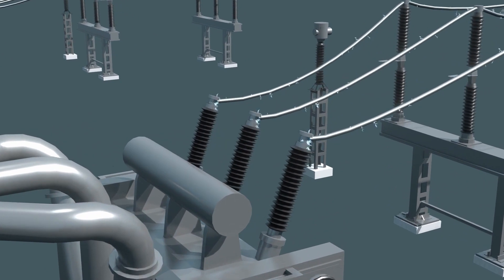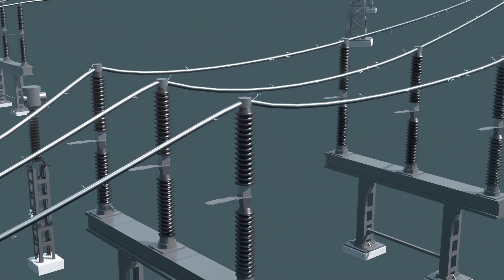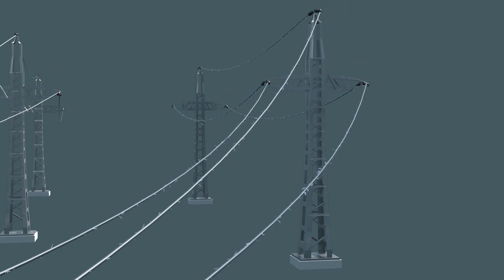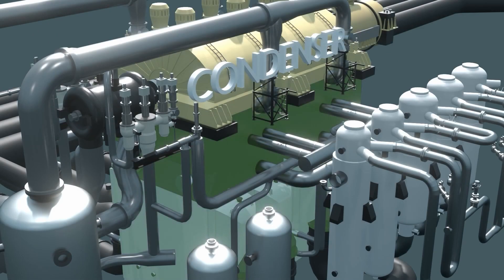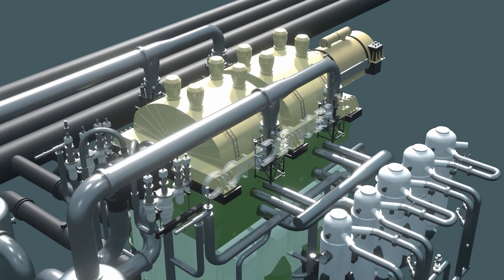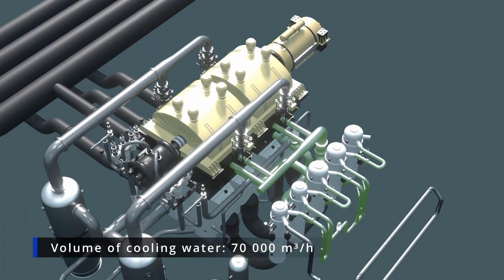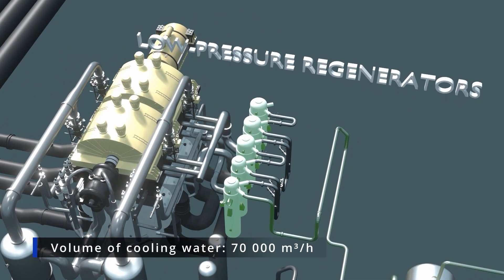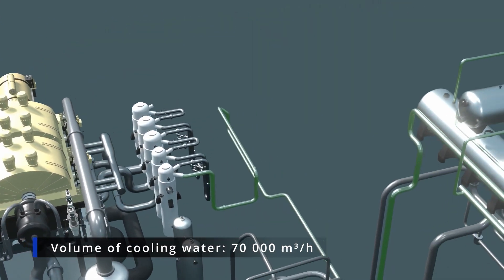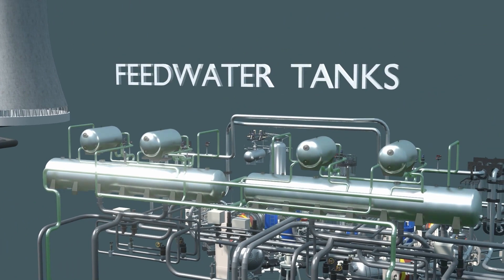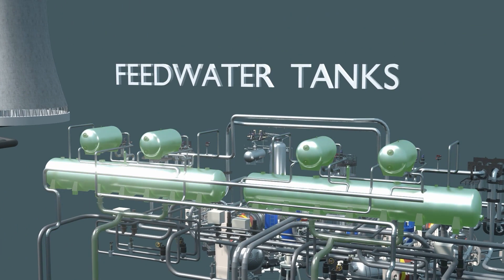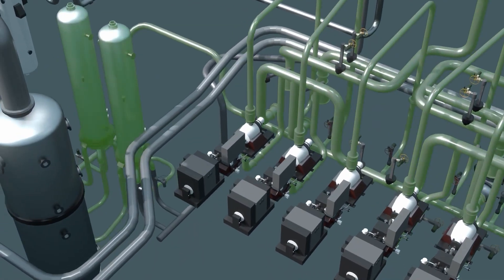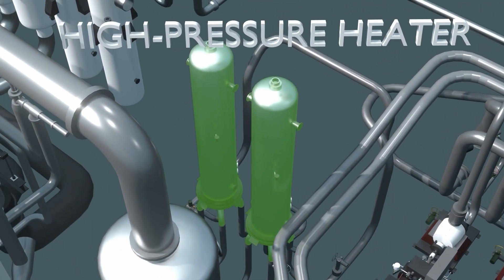While the electricity from the nuclear power plant is already on its way to you, the steam of the secondary circuit is condensed in a condenser after passing through the turbine. It is converted back into water and passes through the low-pressure regenerative heaters to the feed tank, and from there through the high-pressure heaters back to the steam generators, thus closing the secondary cooling circuit.